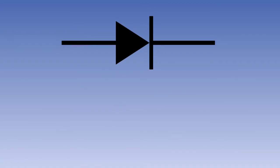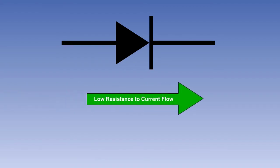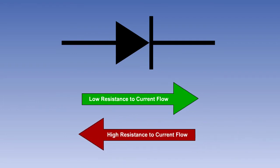A rectifier is a device which will convert alternating current into direct current. The most common rectifier in use in aircraft systems is the solid-state diode rectifier. The electrical symbol for a diode rectifier is shown here. The diode is a semiconductor device, and its operation is fully explained in the lesson on semiconductors. It has a very low resistance to current flow in the direction of the arrowhead and a very high resistance in the other.